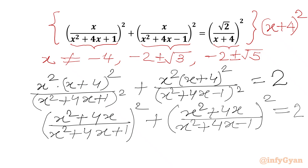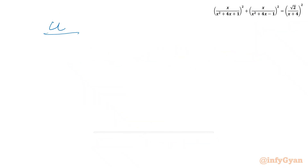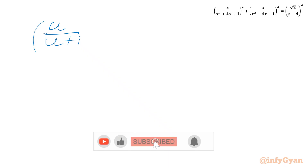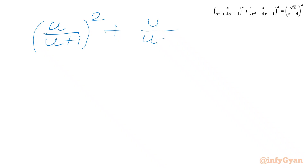Now we are going to consider our substitution. Let x² + 4x = u. So x² + 4x + 1 would be u + 1, and x² + 4x - 1 would be u - 1. So we can write our equation as (u / (u + 1))² + (u / (u - 1))² = 2.